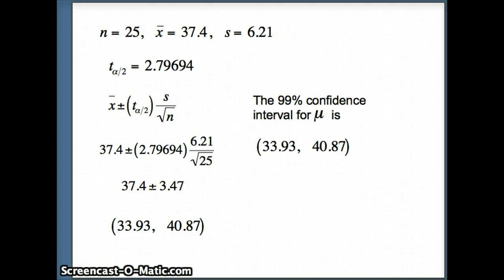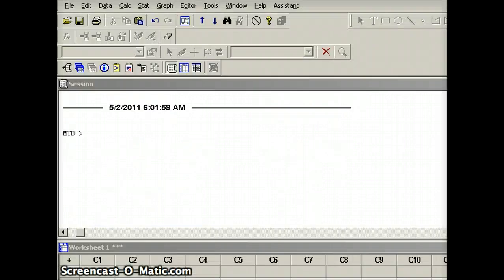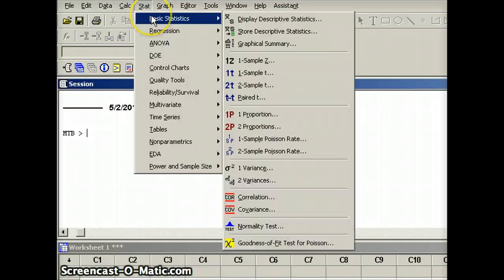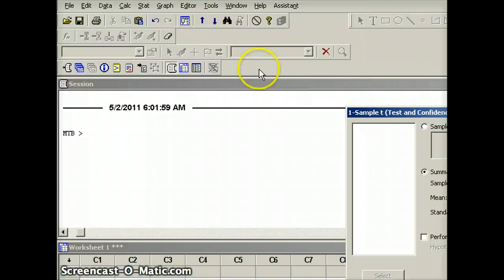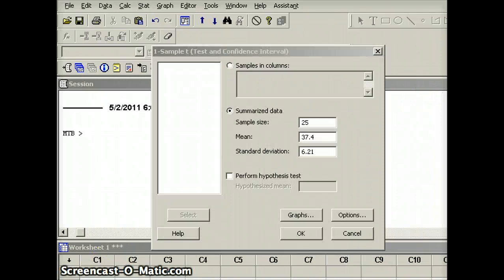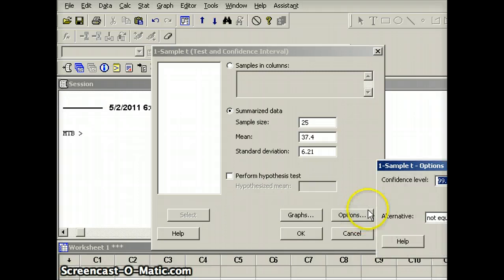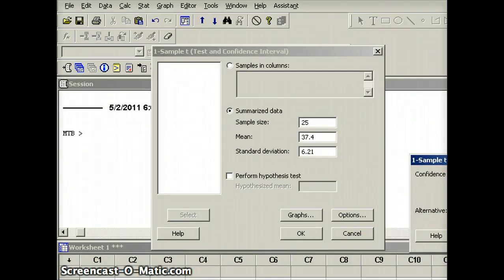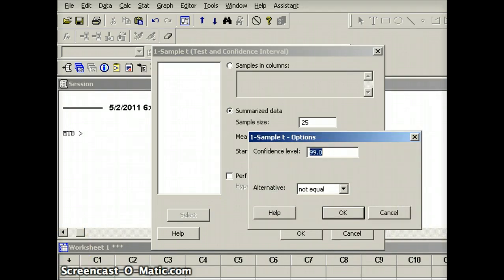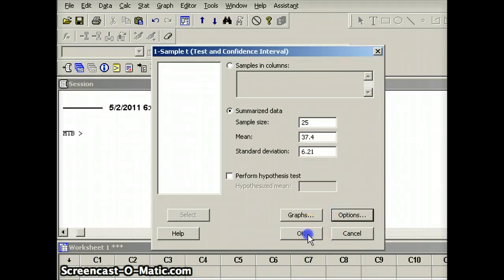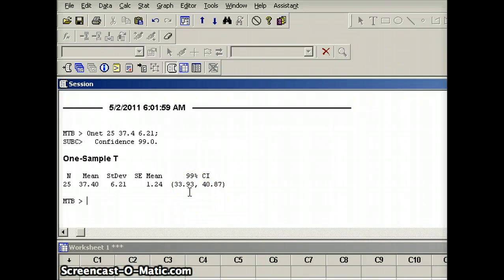So therefore, we're going to conclude that the 99% confidence interval for mu is indeed 33.93 to 40.87. Now we're going to go ahead and check that on Minitab. Okay, to do that, we're going to go up to the stat menu, to basic statistics, and we're going to look at a one sample t. And you'll notice that I've put in a sample size of 25, a mean of 37.4 and a standard deviation of 6.21. And I'm going to click on the button that says summarize data. Then I'm going to go to options. And the confidence level we're going to use is 99%. We're going to say okay. And you'll notice we get our confidence interval of 33.93 and 40.87.